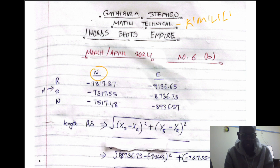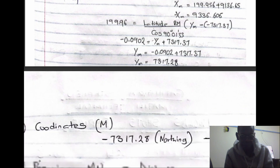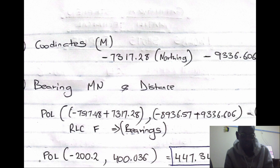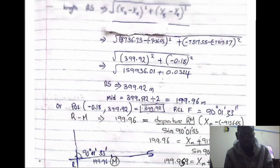This is question number six B. We were given coordinates — the northing and the easting. We were asked to calculate where M is, and we were told M is the midpoint between R and S. We are given coordinates for M, which are negative coordinates for both the easting and the northing — these are the departures or latitudes. We need to calculate the coordinates and the bearing of M, and the distance.